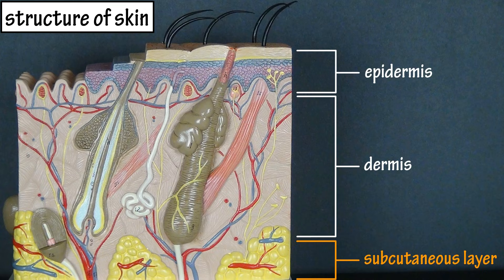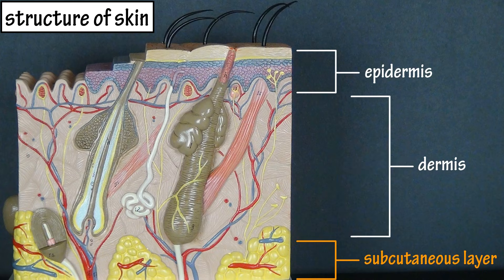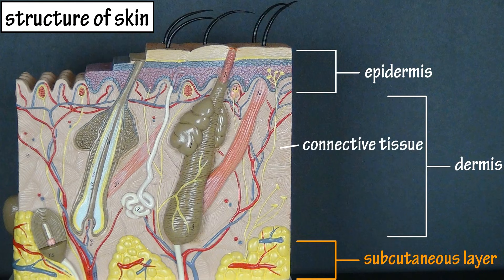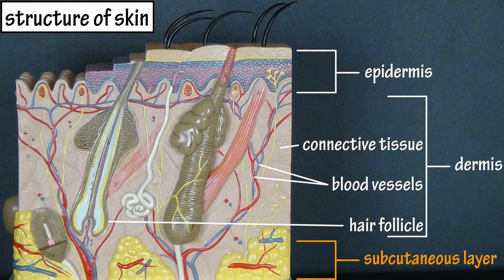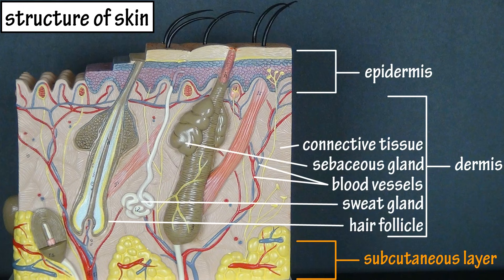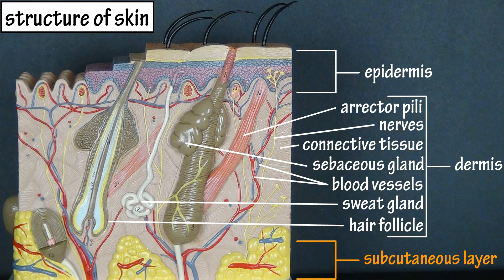Now let's look at the dermis. The dermis is comprised of connective tissue proper, with collagen being the most plentiful type of fiber found throughout the dermis. The dermis also houses other structures such as blood vessels, hair follicles, sweat glands, sebaceous glands — which secrete a lubricating oil — sensory nerve endings, nail roots, and erector pili muscles, which affect hair follicles. We will cover these structures in depth in future videos.